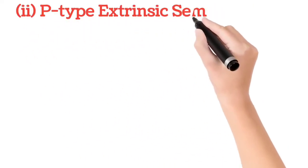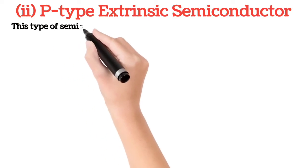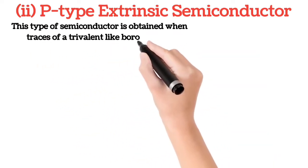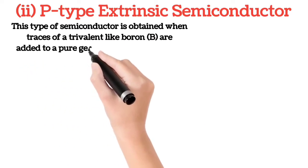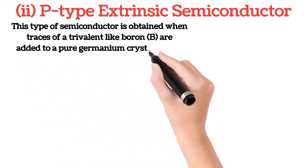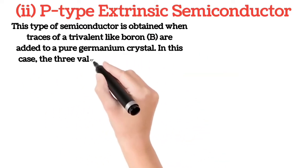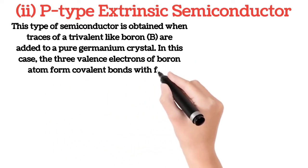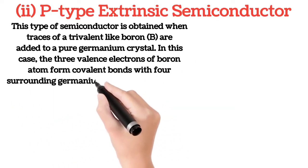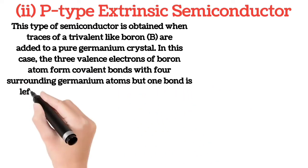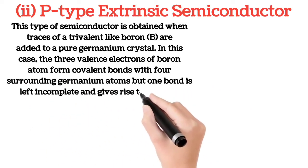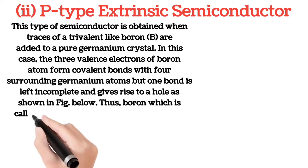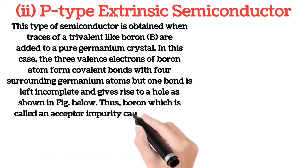P-type semiconductor is obtained when traces of a trivalent impurity like boron are added to a pure germanium crystal. In this case, the three valence electrons of the boron atom form covalent bonds with four surrounding germanium atoms, but one bond is left incomplete and gives rise to a hole, as shown in the figure below. Thus, boron — which is called an acceptor impurity — causes as many positive holes in a germanium crystal as there are boron atoms, thereby producing a P-type (P for positive) extrinsic semiconductor.